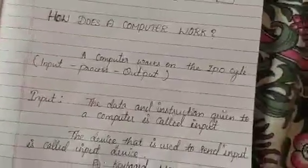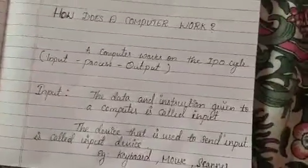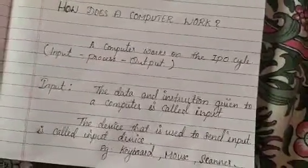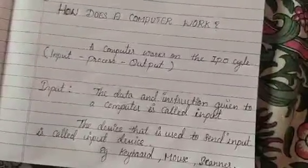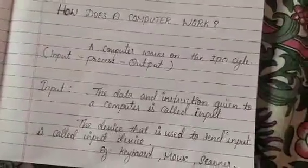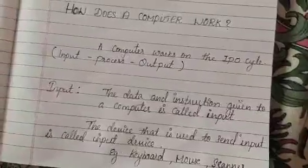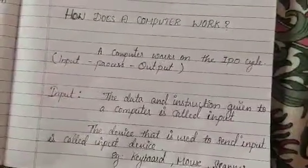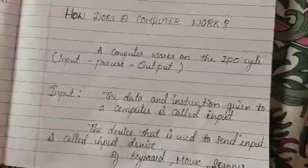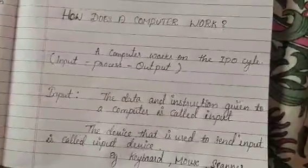So first one is input. What is an input? The data and instructions given to a computer is called input. The device that is used to send input is called input devices. We use some devices to send the input, so those devices are called input devices.